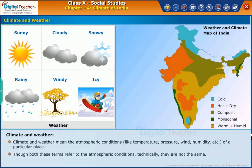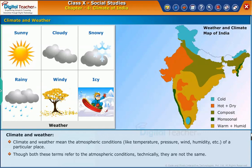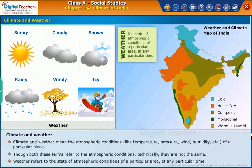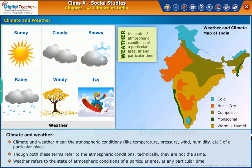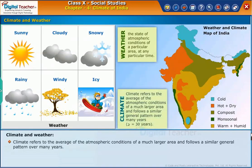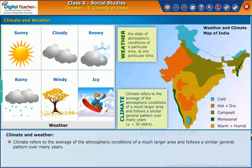Though both these terms refer to the atmospheric conditions technically, they are not the same. Weather refers to the state of atmospheric conditions of a particular area at any particular time. Climate refers to the average of the atmospheric conditions of a much larger area and follows a similar general pattern over many years.